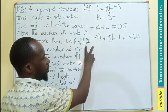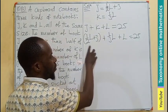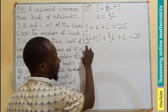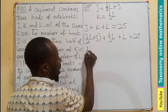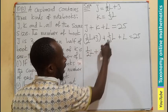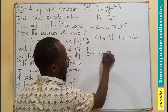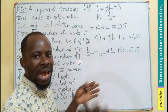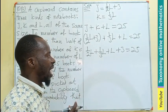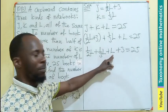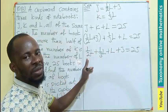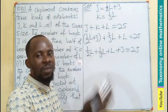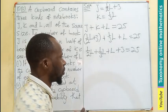We now have one-half L plus one-third L plus L plus three equals 25. To solve a linear equation involving fractions, we find the LCM of the denominators, which are 2 and 3, giving an LCM of 6, and multiply everything through by 6.